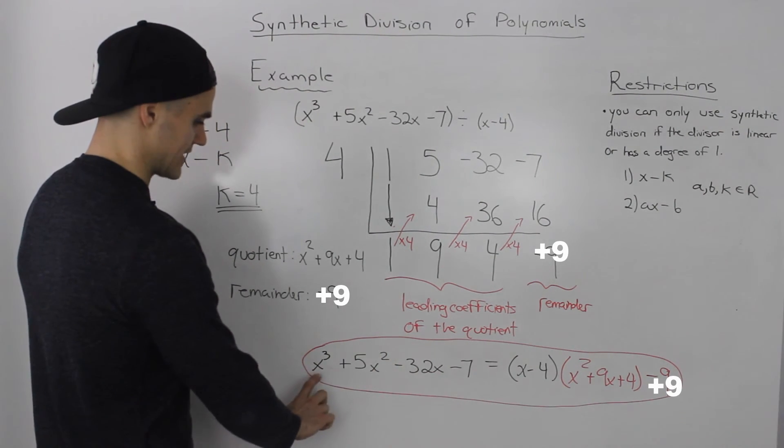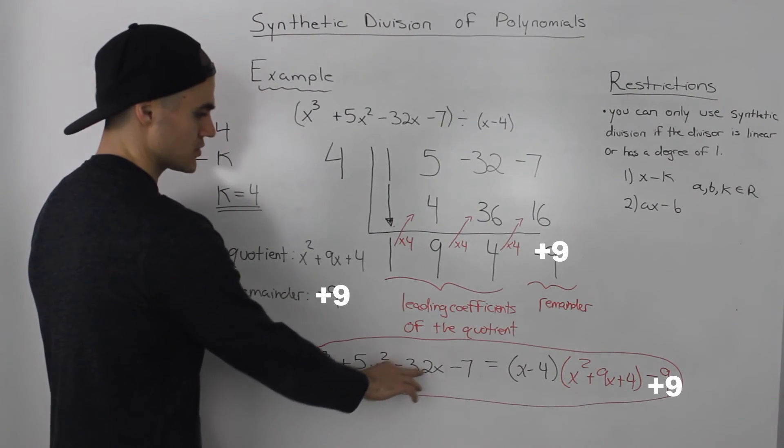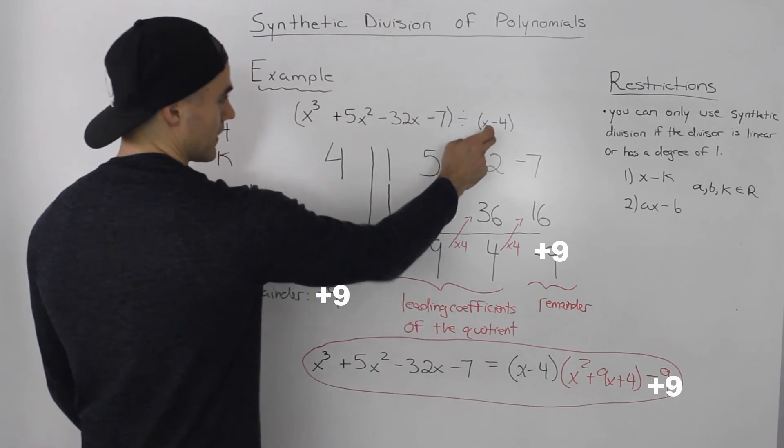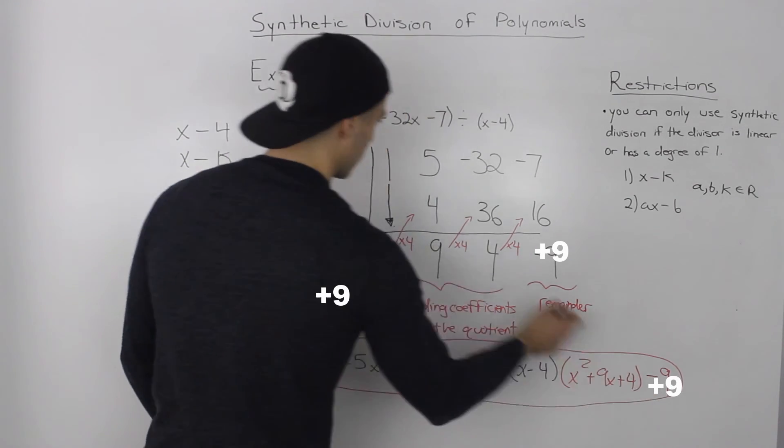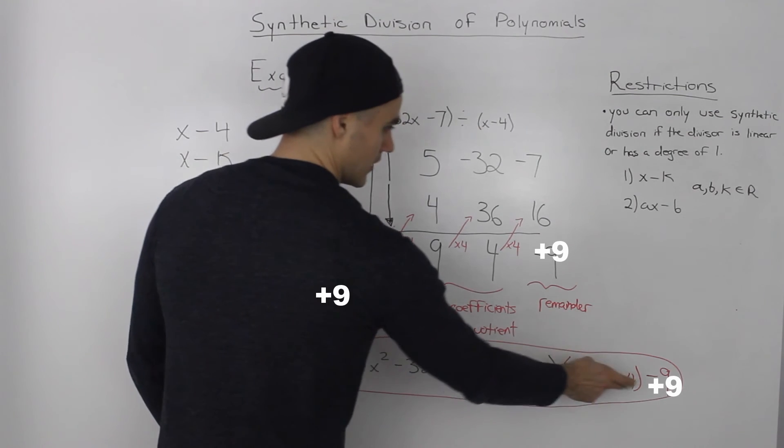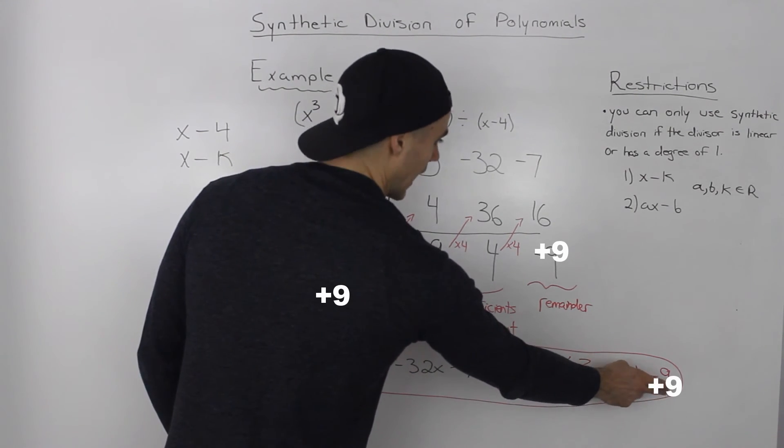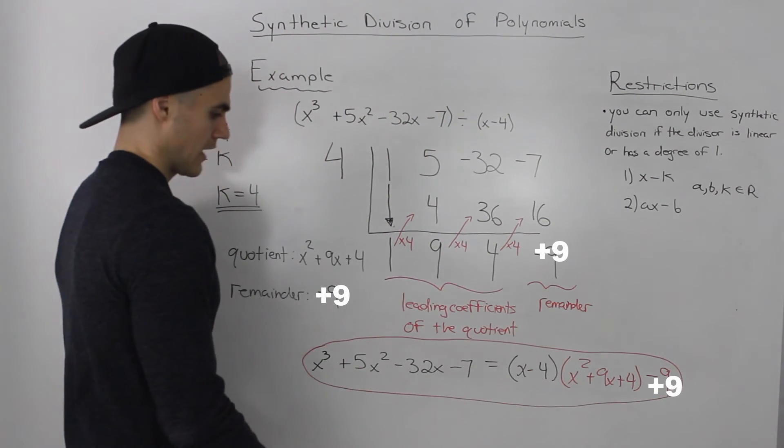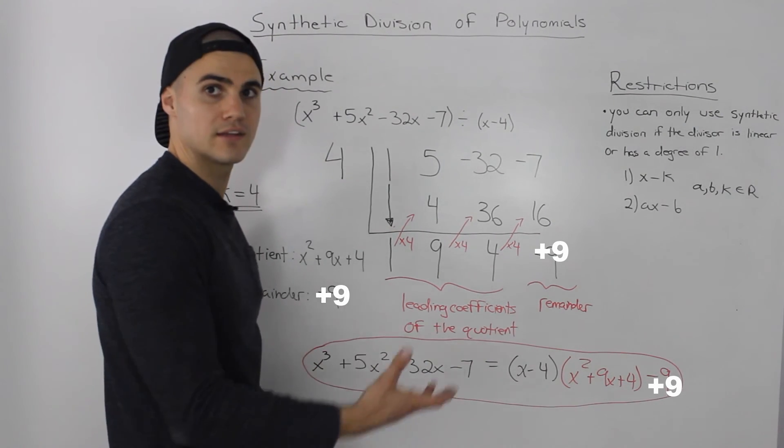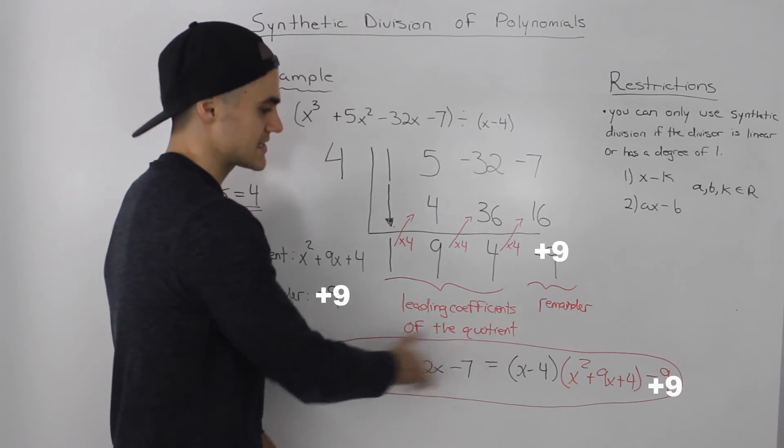So I wrote out the result here in a division statement, so the dividend, x cubed plus 5x squared minus 32x minus 7, is equal to the divisor, which was x minus 4, times the quotient, which we got of x squared plus 9x plus 4, plus the 9, which was the remainder. And if you compare this answer to the one that we did in the long division overview video, it's the same answer.